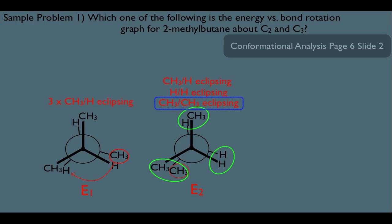Let's keep track of our progress so far. Just looking at these two structures, we already have an idea of what our graph would look like. If the energy of Eclipse Structure 1 was right here on the graph, then E2 should be higher than it over here. But just to be safe, we should get one more eclipsed structure to be sure we know the trend of our graph.